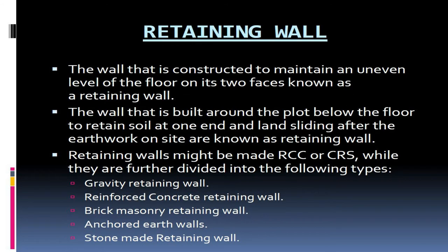Retaining wall. The wall that is constructed to maintain an uneven level of the floor on its two faces is known as a retaining wall. The wall that is built around the plot below the floor to retain soil at one end and prevent landsliding after earthwork on site is also known as a retaining wall. Retaining walls might be made of RCC or CRS, and are further divided into: gravity retaining wall, reinforced concrete retaining wall, brick masonry retaining wall, anchored earth walls, and stone made retaining wall.